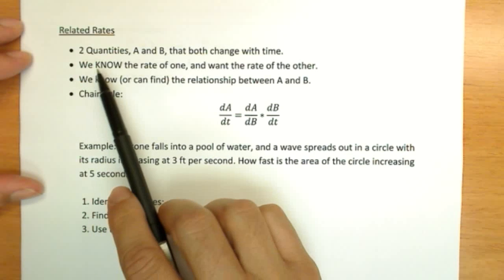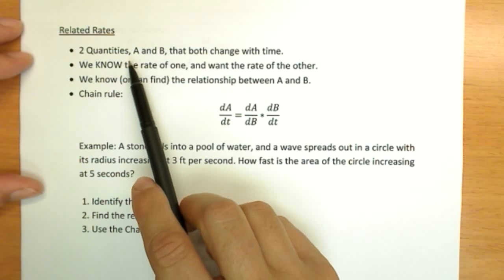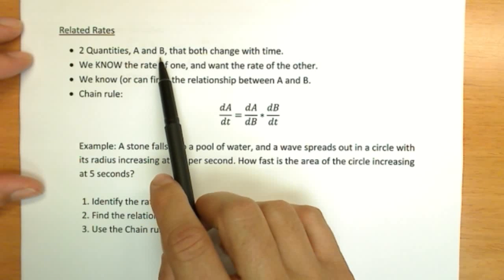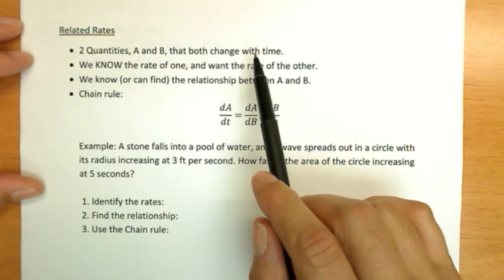Related rate problems are when you have two quantities, and of course their names are generally something more meaningful than A and B. They're both changing, and generally with time.